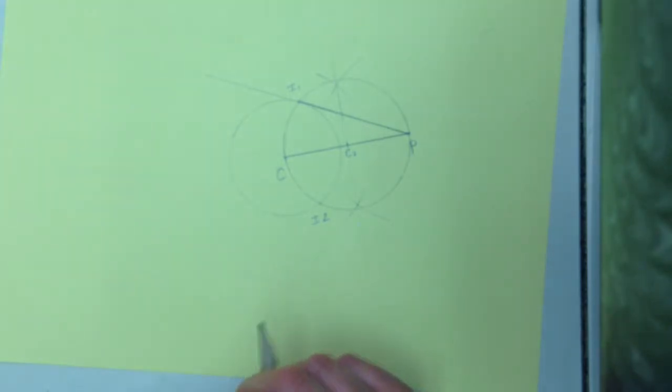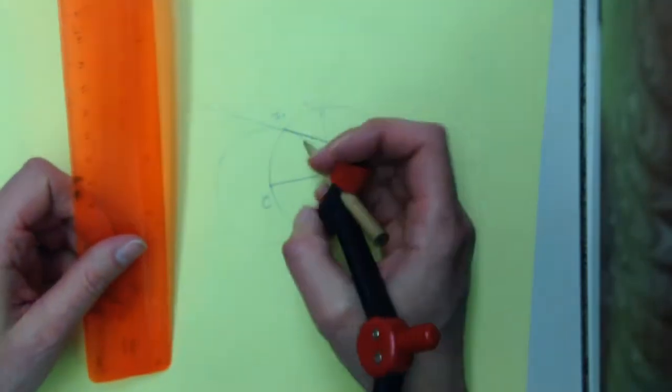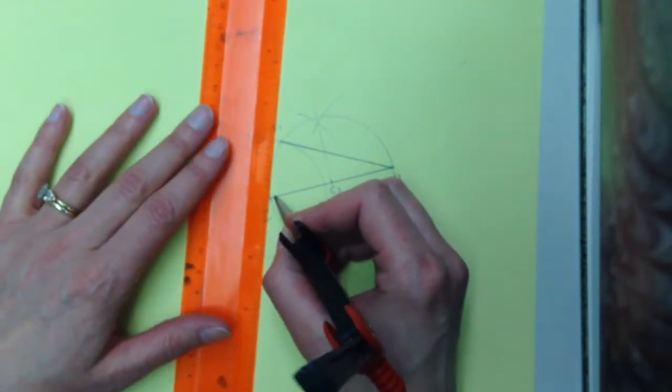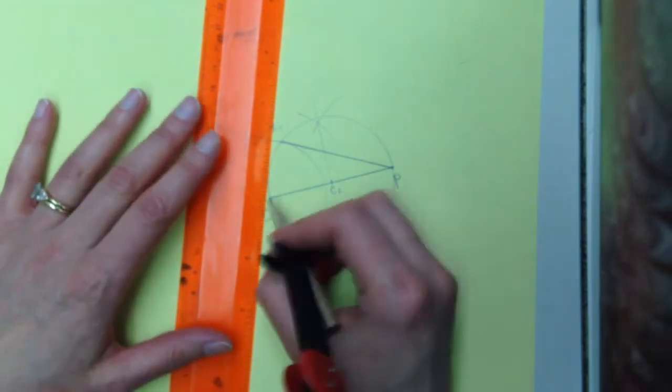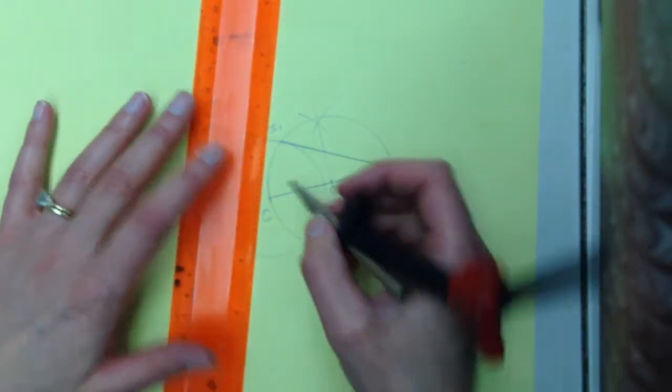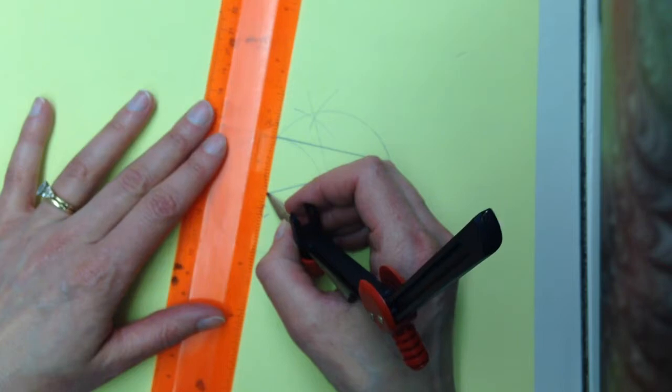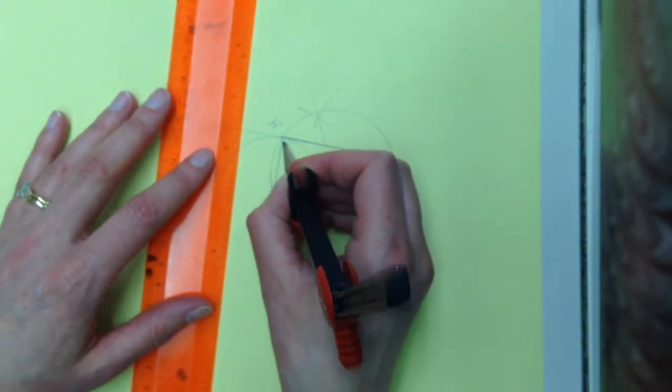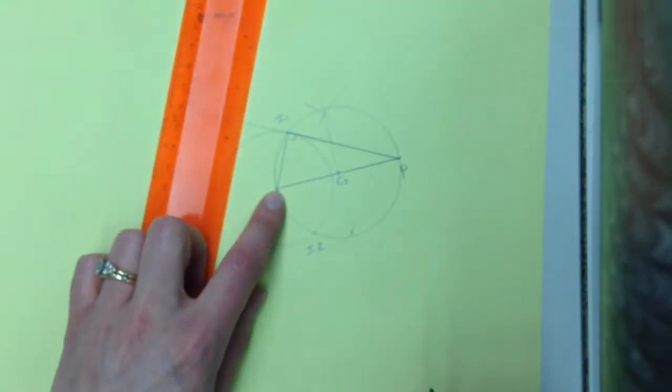The reason that this works and that we know for sure that is a tangent line, is because if I take that point of tangency and the center of my old circle, that should be a right angle, because I'm connecting a tangent line to a radius of a circle.